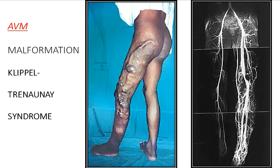This is an arteriovenous malformation. You see the varicosities start at the gluteal region, affecting an abnormal site on the lateral aspect of the thigh, around the knee and upper leg. The radiological appearance shows the normal arterial tree and the plexiform venous plexus that involves the whole lower limb from top to bottom.